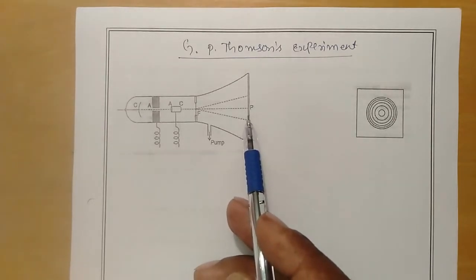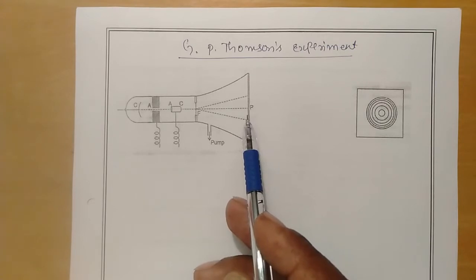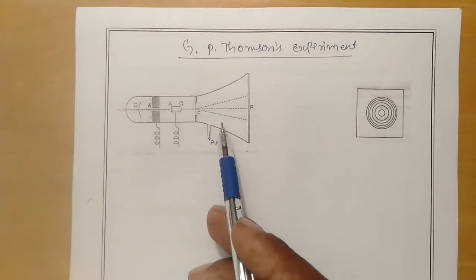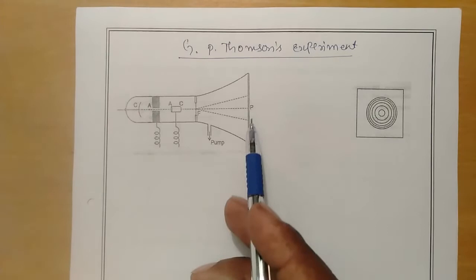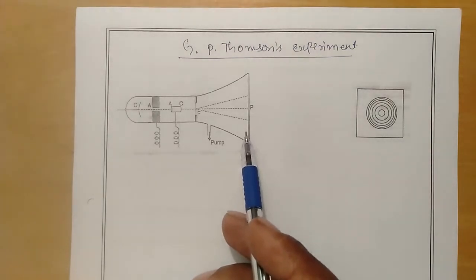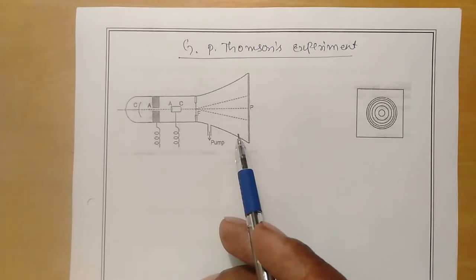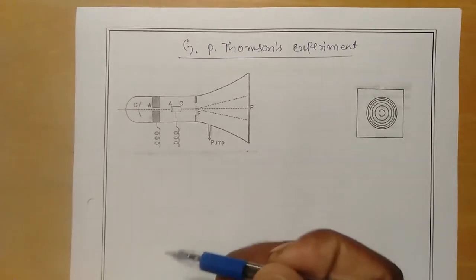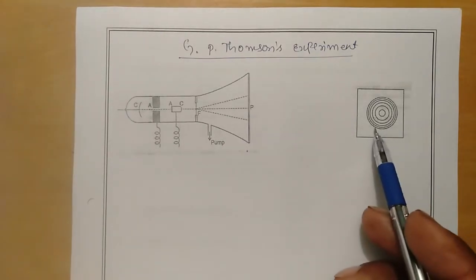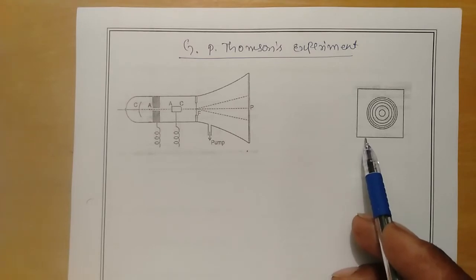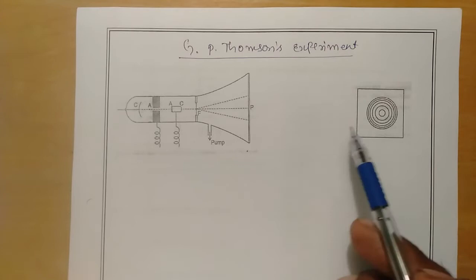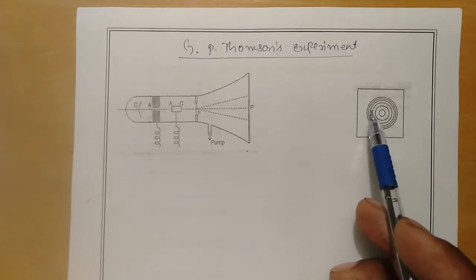On the fluorescent screen, you can immediately see what is happening as the accelerated electrons come out of the gold foil. If a photographic plate is used instead, after developing it, you can observe what happens after the electrons are incident on the gold foil.